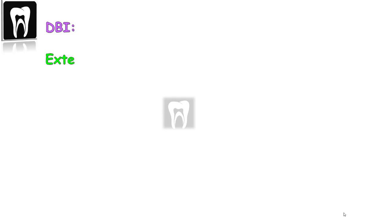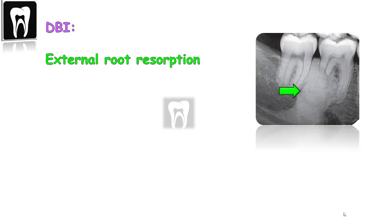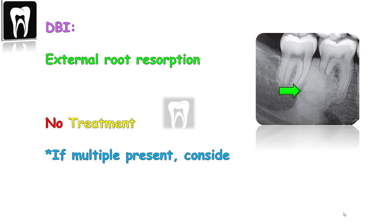A dense bone island located periapical to the tooth root can cause external root resorption. Dense bone island does not require treatment. If multiple dense bone islands are present, the patient's family history should be reviewed for the presence of colonic polyps for Gardner syndrome.